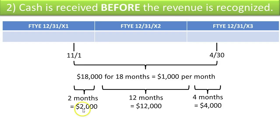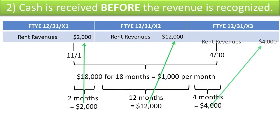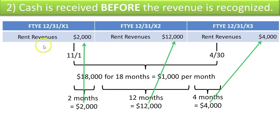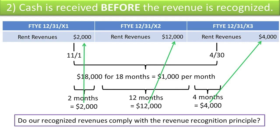We showed that we were supposed to have $2,000 of rental revenue in 20X1, and that's what got recorded. $12,000 in X2, and that's what got recorded. $4,000 in X3, and that's what got recorded. It appears that our journal entries properly updated the rent revenue account to show what we've actually recognized. Do our recognized revenues comply with the Revenue Recognition Principle? Yes, they do.